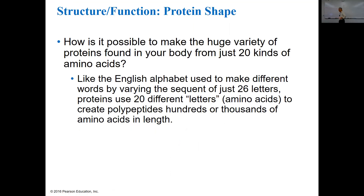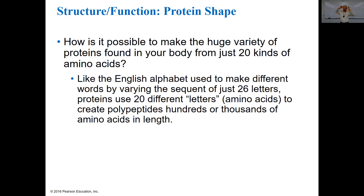How is it possible to make the huge variety of proteins from just 20 kinds of amino acids? Like the English alphabet — there are only 26 letters, but you can make gazillions of words. Same thing with proteins: there are 20 letters in the alphabet, and you can mix and match those 20 in all different ways to make many, many different kinds of proteins. Some proteins are really short — 10, 15, 20 amino acids long. Some are hundreds of amino acids long.